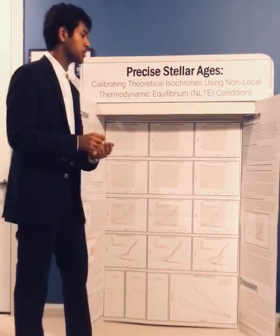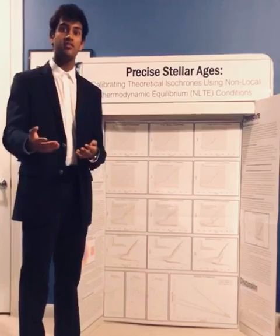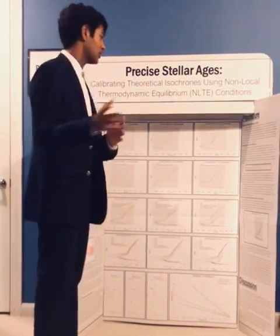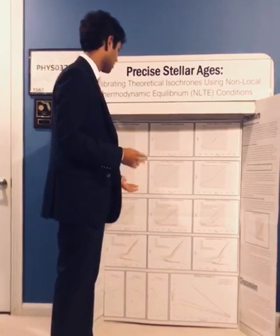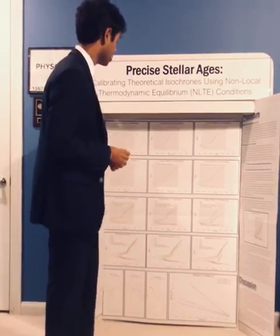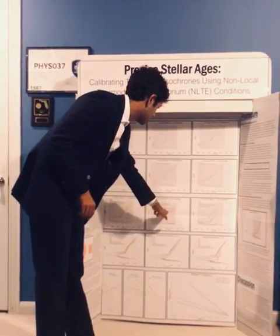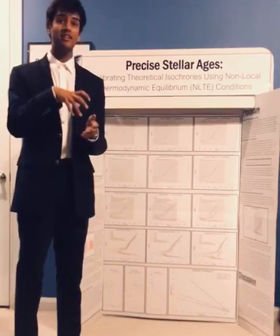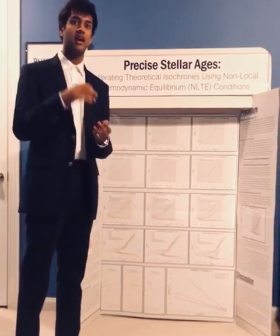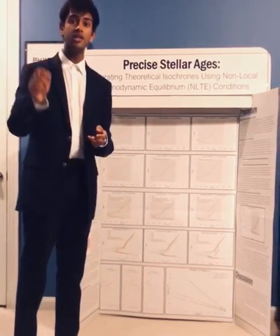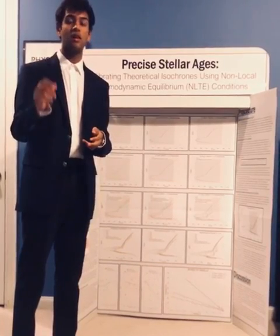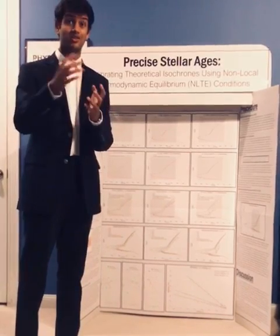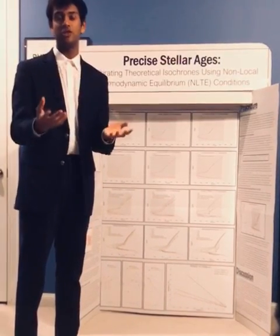The aim of this project was to use NLTE models for the first time to create isochrones and see if this changed how we measure the age of stars. I did all of that — that's what all of these graphs are for. Basically, the only detail that's really important is the difference you can see here between the LTE models and the NLTE models. What that implies is that the LTE models have underestimated the age of stars by two billion years.